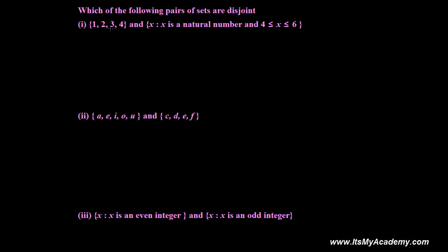First set is 1, 2, 3, 4. Let's write here 1, 2, 3, 4. This is our first set and second set we have x where x is a natural number and x is greater than or equal to 4 but less than or equal to 6, means it is 4, 5, and 6.